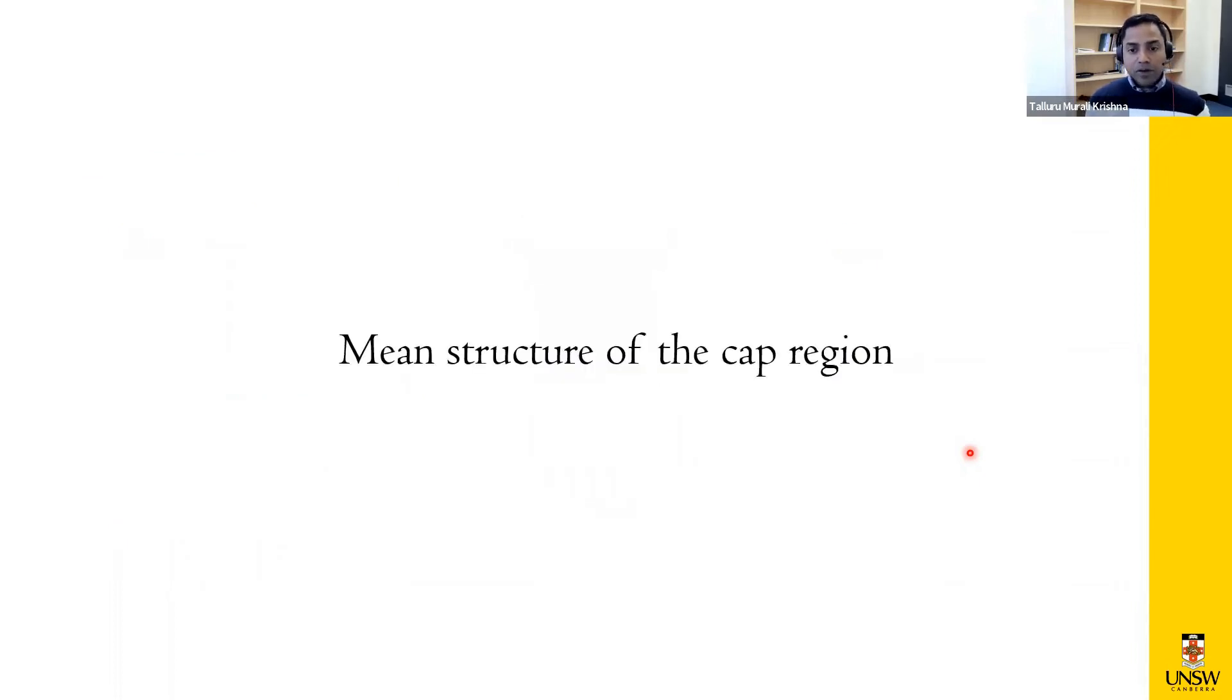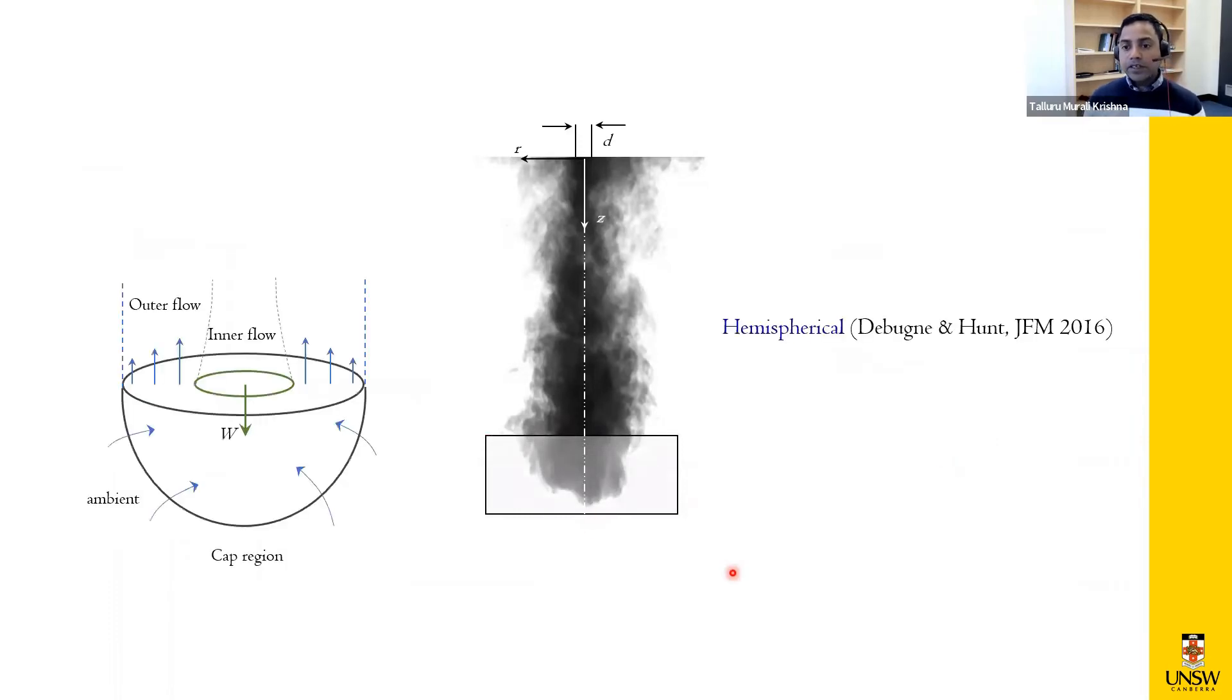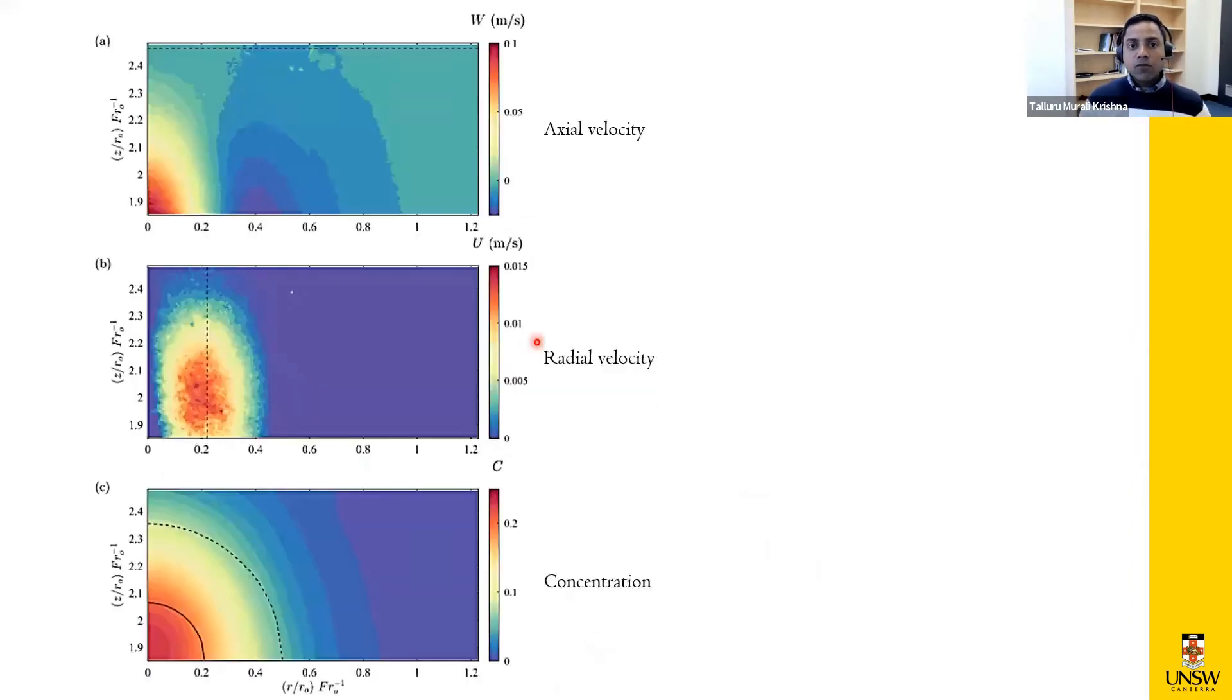So the first thing in any fluid problem is we want to look at the mean structure. And so if I focus just the cap region, this paper by Professor Gary Hunt's group at Cambridge, they've done really fantastic work on this topic. So one of their results, again, through analytical arguments, they've showed that the cap region can be treated as a hemispherical dome. And again, then you can define an inner flow, outer flow. And basically, they've developed a nice model to predict the entrainment as a function of the inner flow parameters. Now, to justify that, what I have done is I've looked at the axial velocity, the radial velocity, as well as the concentration distribution. Again, these are all the mean profiles calculated using the ensemble average of all the images that you've collected.